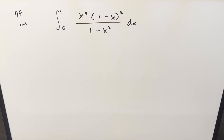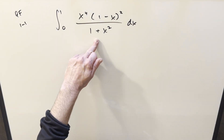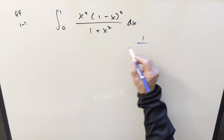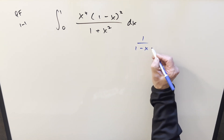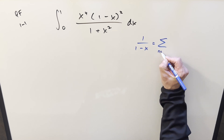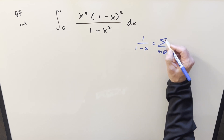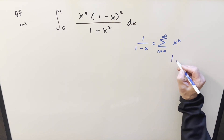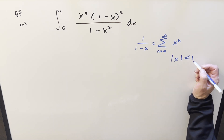I'm doing two videos on this one — a short method and a long method. This is probably the longer way, where I want to notice that with the bounds from zero to one and with this denominator, I can use geometric series. Our geometric series formula is: one over (1 minus x) equals the sum from n equals zero to infinity of x to the n.